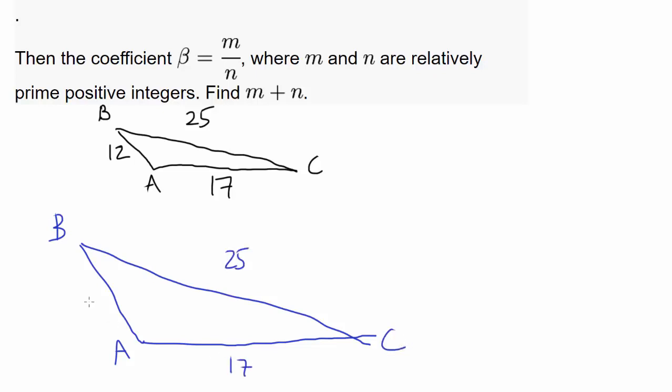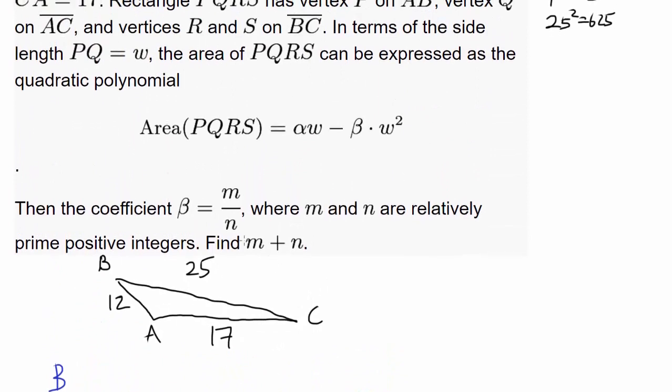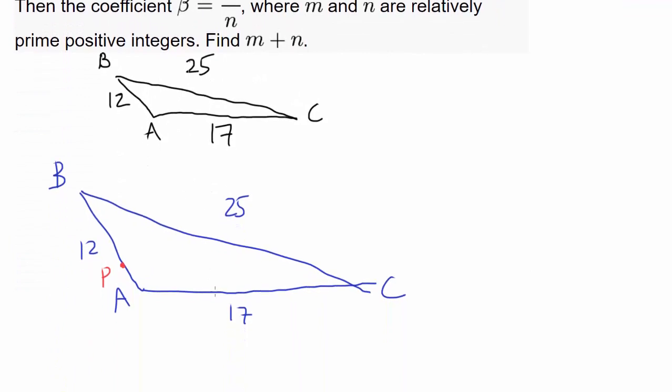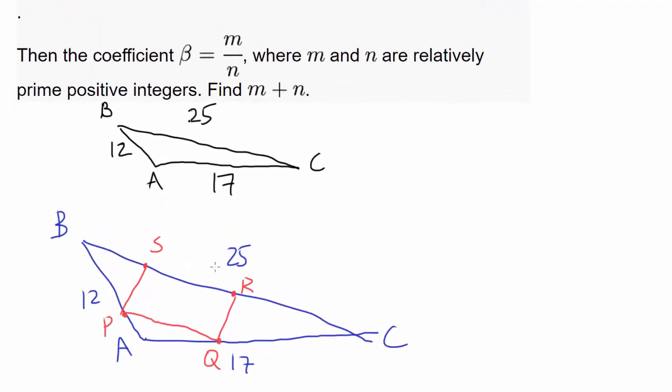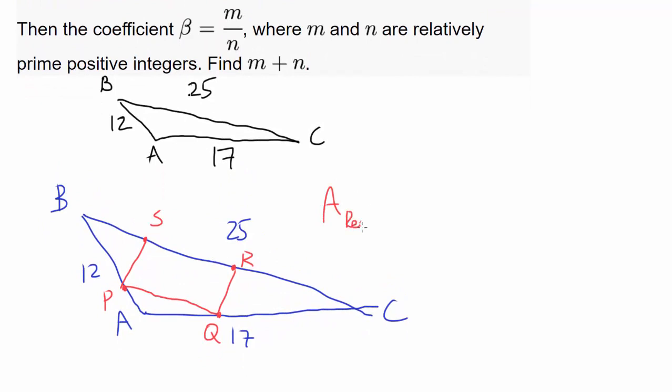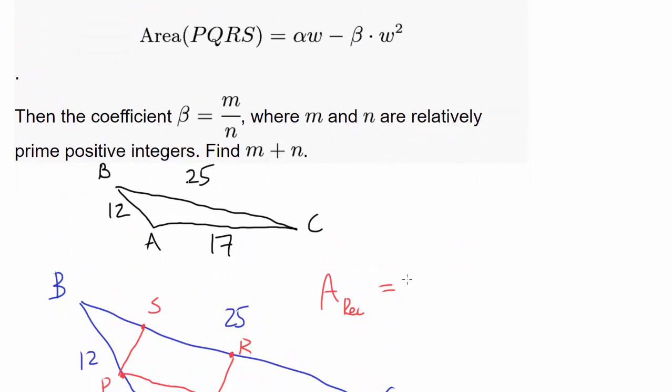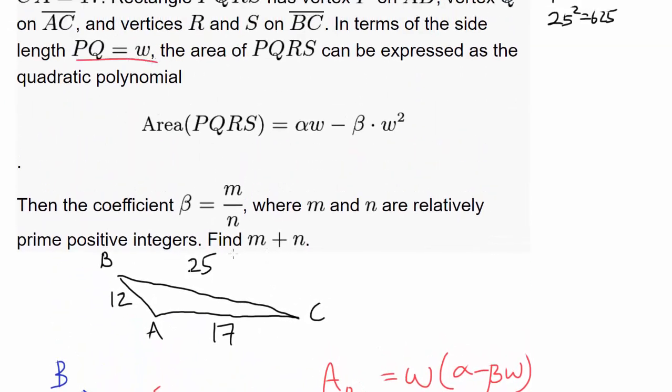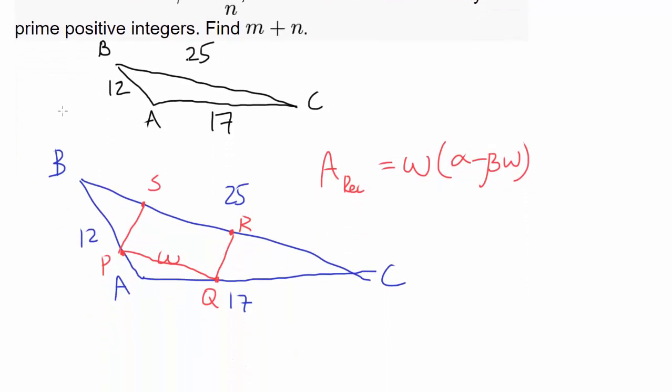So we have ABC, 25, 17, 12 and we have PQRS. We have P on AB, Q on AC and R and S on BC. So we have all 90 degree angles, opposite sides are equal and everything going on. We know area of this rectangle is equal to alpha W minus beta W squared. Let me factor out W to get W times alpha minus beta W. And we know W is PQ. That's telling us this length is alpha minus beta W. Maybe that's a starting point.